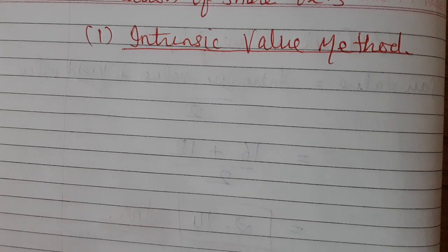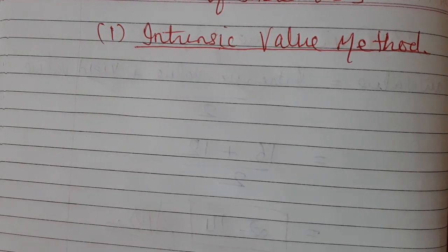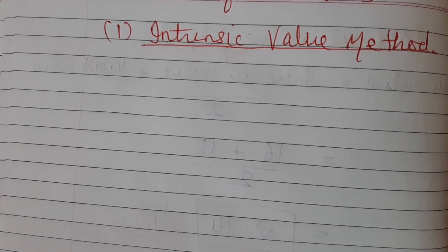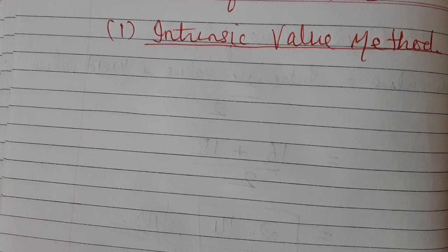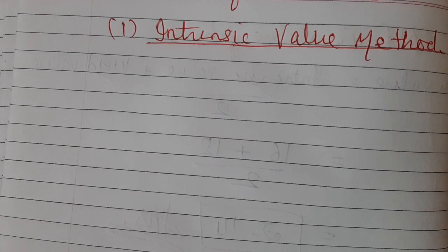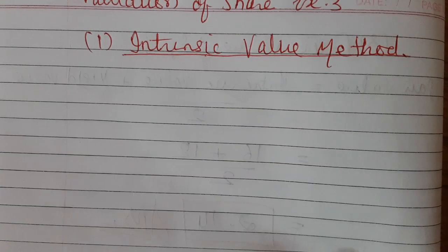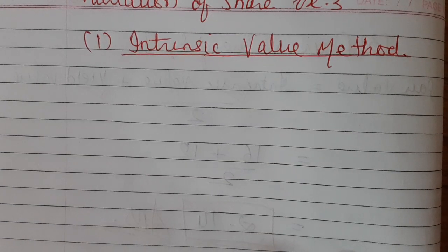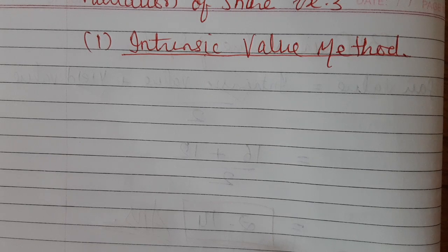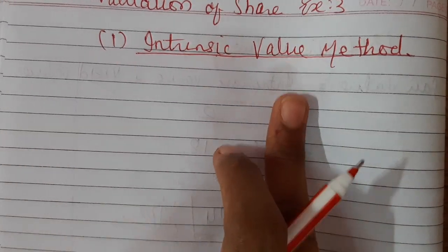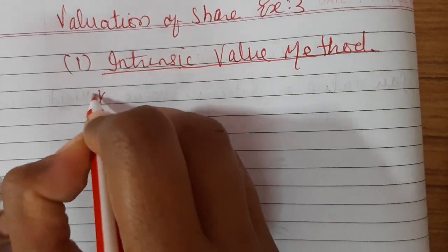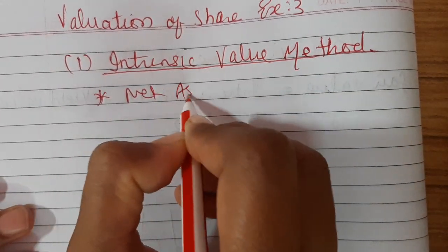This example was asked in April 2015 in Saurabha's University examination, and the example courtesy is also from B.S. Shah Prakashan. Now, for finding out fair value, we need both values: intrinsic value as well as yield value. So, starting with intrinsic value first.